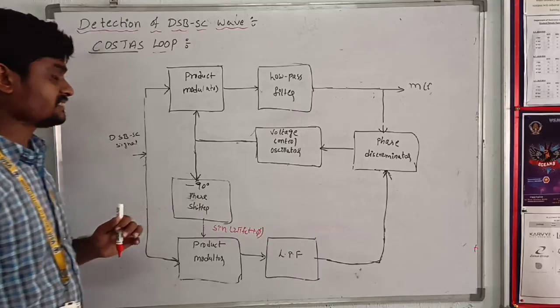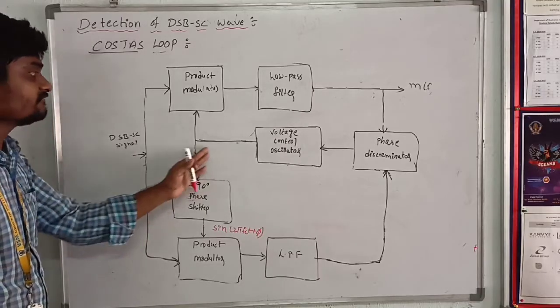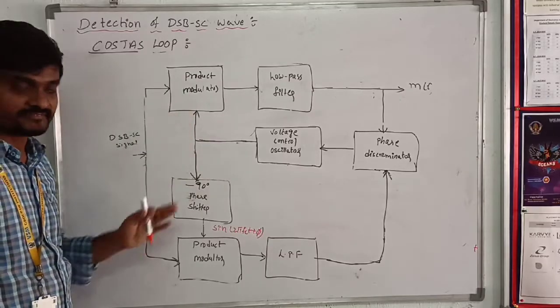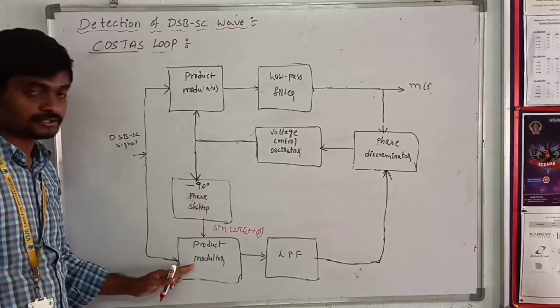The local oscillator generates a signal in phase to product modulator 1 and out of phase to product modulator 2.